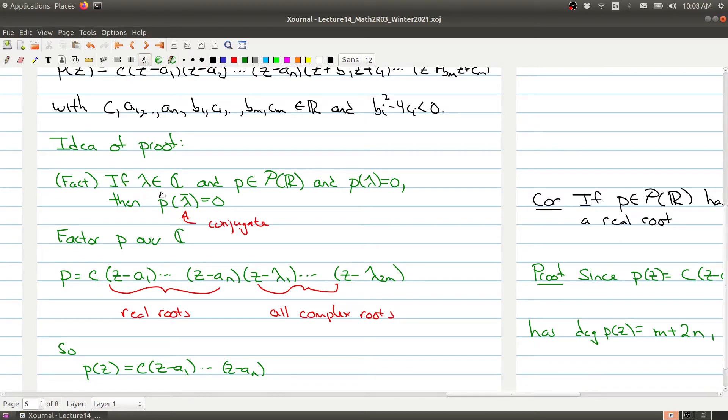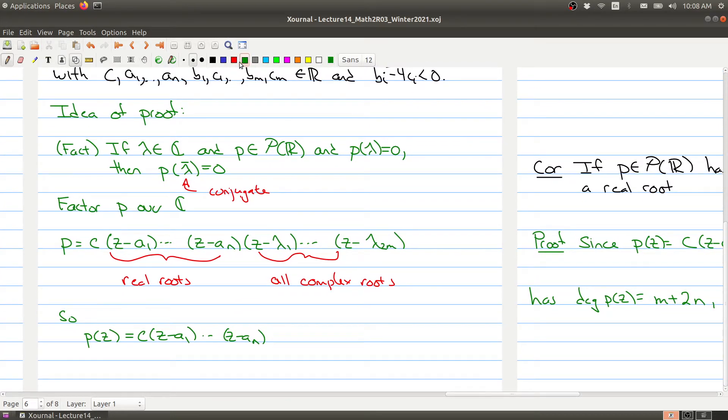But now by the following fact, these complex roots have to come in complex conjugate pairs. So if λ₁ is a root, then the conjugate of λ₁ also has to be among these polynomials on the right-hand side. So we can group them by complex conjugates. So they come in conjugate pairs. And so you can group them all together. So you can have z - λ₁ times z - the conjugate of λ₁, and you do this for all the pairs.